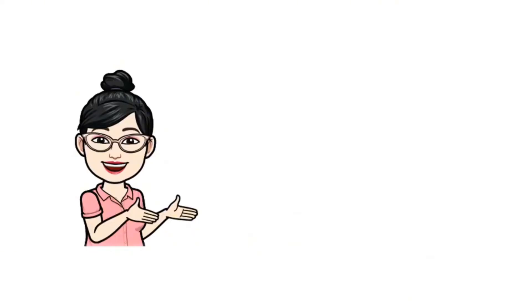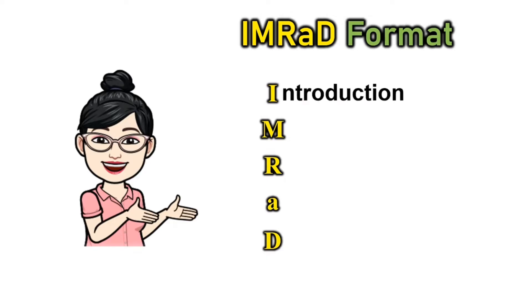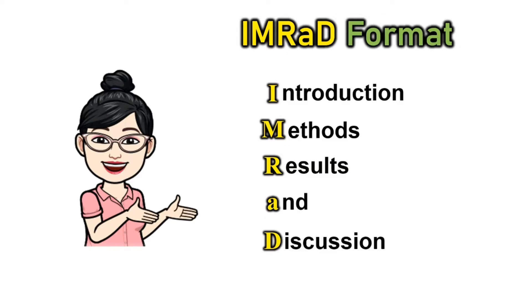Innovations are presented and applied in writing a research report. One key development is the use of the IMRAD format. This format refers to a paper which is structured by four main sections stated in this acronym: Introduction, Methods, Results, and Discussion. This format is often used for lab reports as well as for reporting any planned systematic research in the social sciences, natural sciences, or engineering and computer sciences.